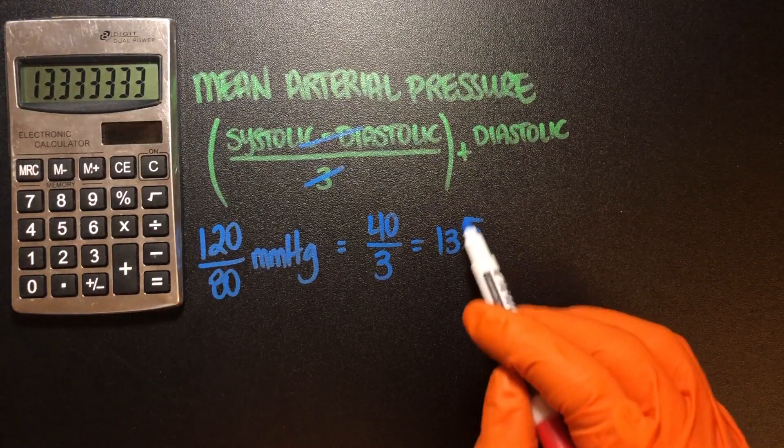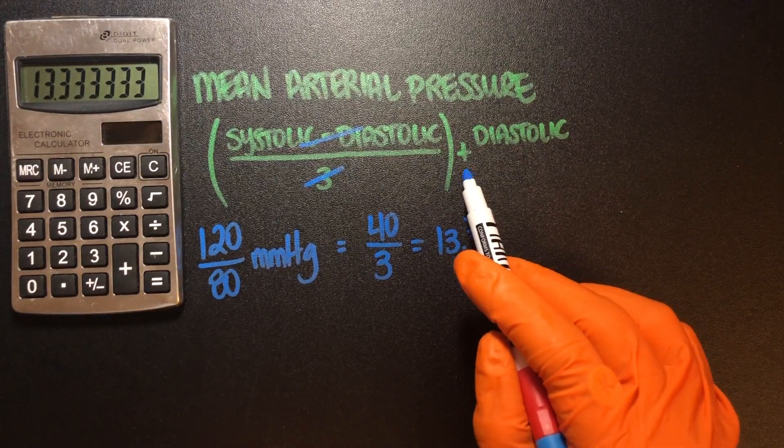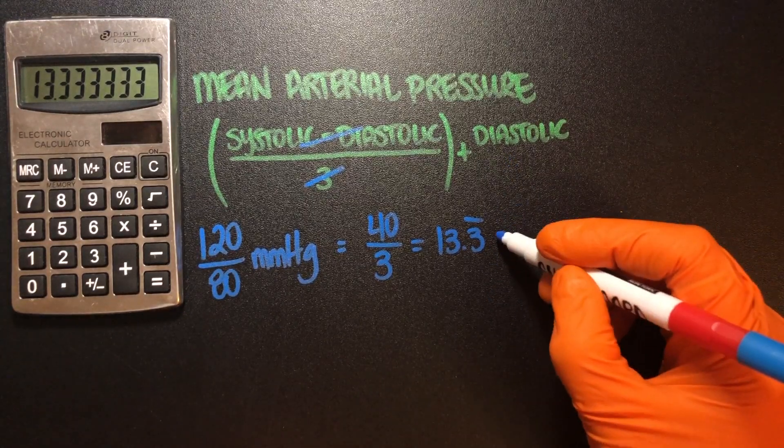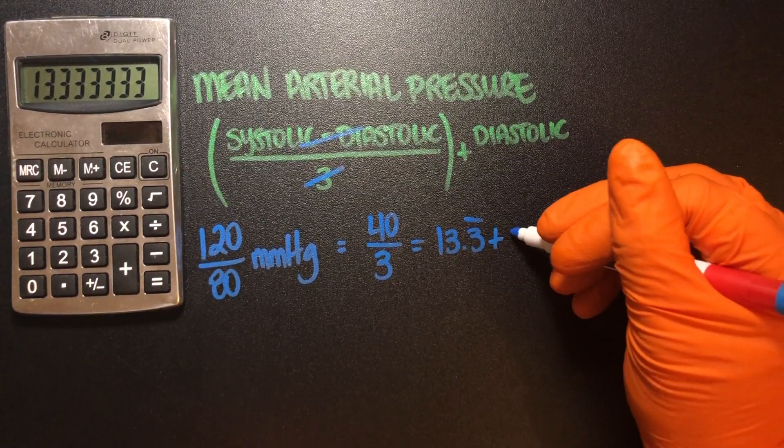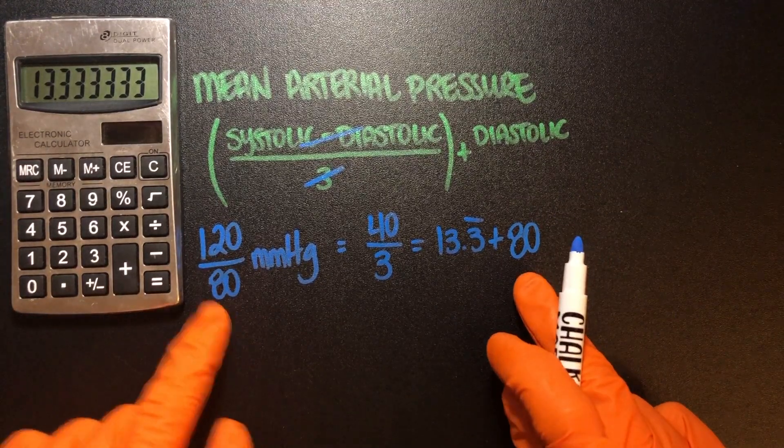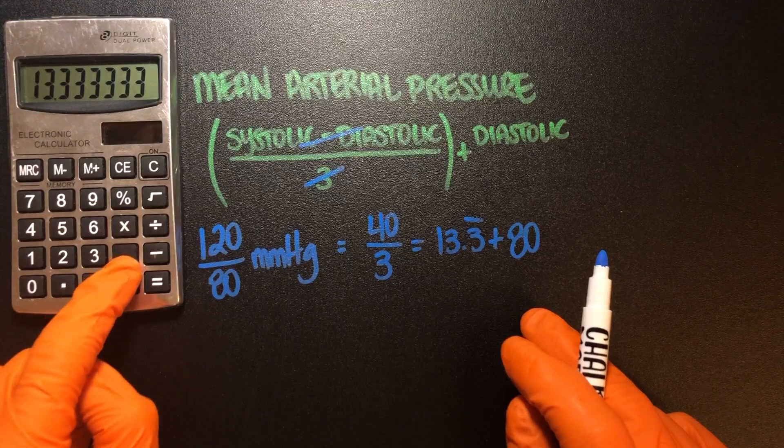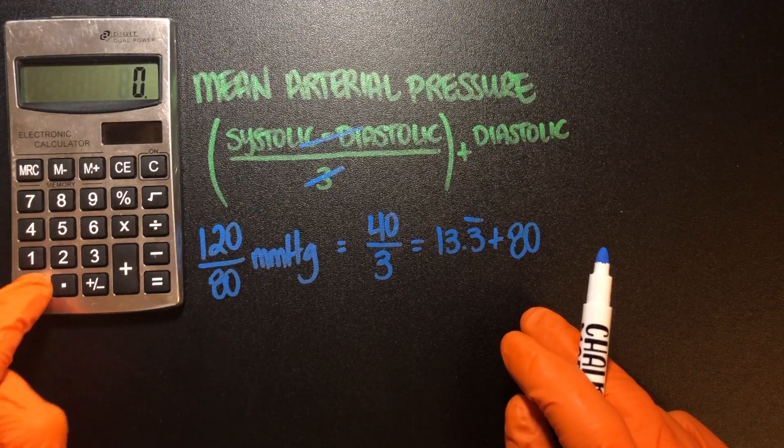And now all we're going to do is then we will add the diastolic, which is 80. So simply hit, remember don't round or do anything, just simply hit plus 80.